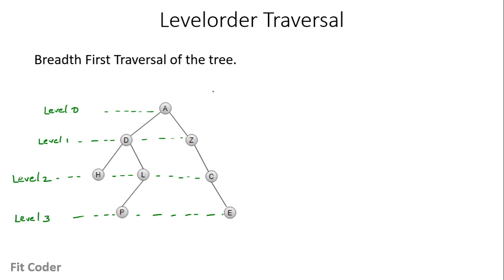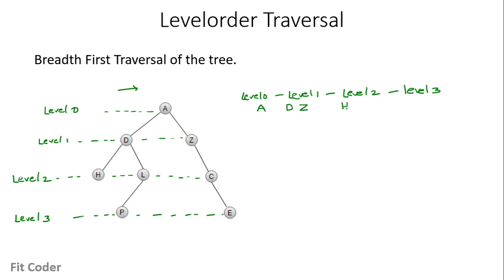Breadth-first traversal of the tree means we first print all the nodes at level 0, then go to level 1, then level 2 and level 3, going from left to right. For this tree, at level 0 we have A; at level 1 we have D then Z; at level 2 we have H, L, and C; and at level 3 we have P and E. This is the level order traversal for this tree.